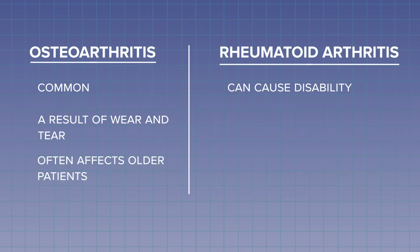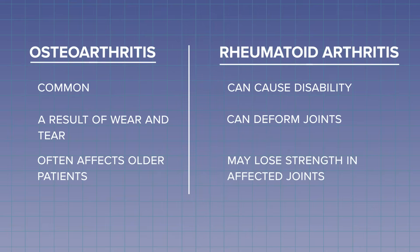RA can cause disability if it's not treated properly, because joints can become deformed and you may lose some of your strength — like being able to hold a fork and a spoon, or being able to lift a gallon of milk. Fortunately, medications are now available to prevent this from happening. Most people with RA live a full and happy life and they just need to work with their rheumatologist to find the best treatment.